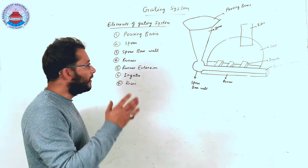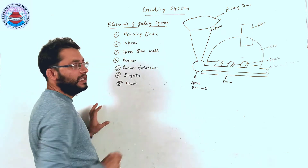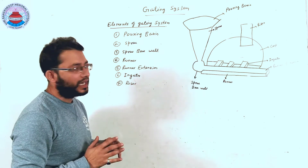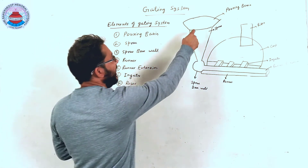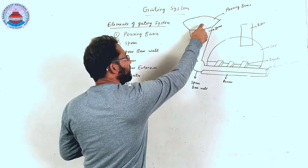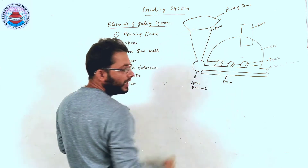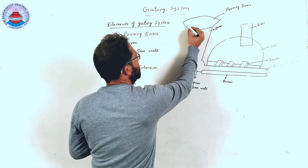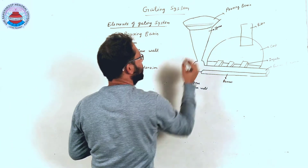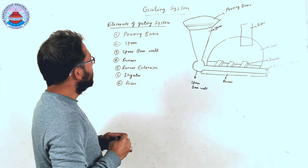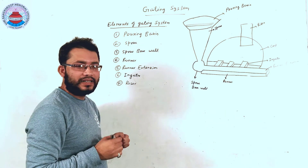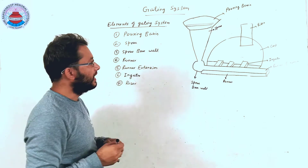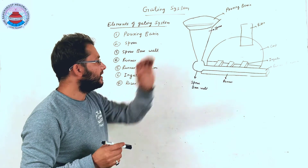The first element is the pouring basin. The pouring basin basically acts as a reservoir in which molten material is collected, and the molten material will reach up to the mold cavity in minimum possible time, being filtered through a strainer or skim core attached here. From the pouring basin, molten material reaches the mold cavity through a sprue, sprue base well, and runner.